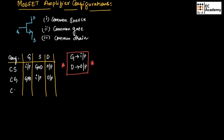In common drain configuration, drain is connected to ground, so drain will be common between input and output. Gate is preferred as input, and that is why source is taken as the output side.